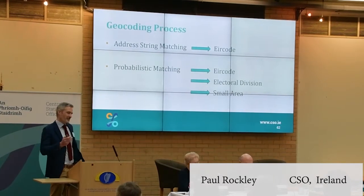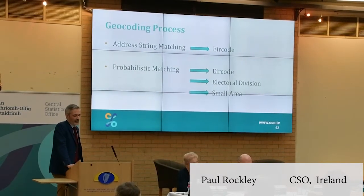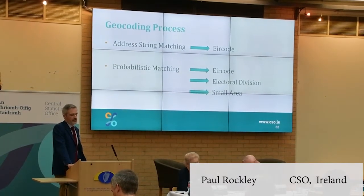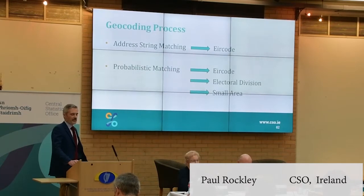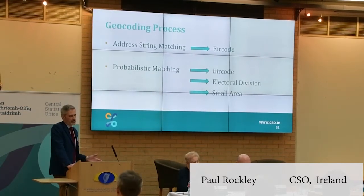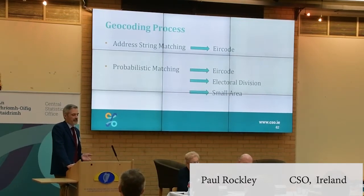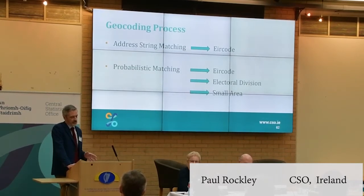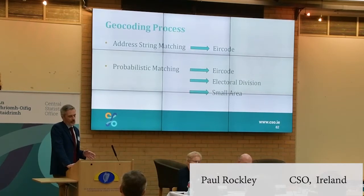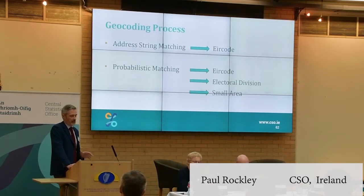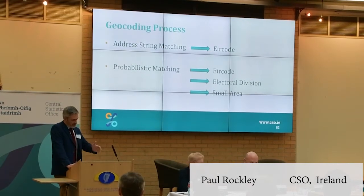We also have issues with non-unique addresses in Ireland. The process is not magic — if you have an address that is shared with multiple properties, you cannot put an Eircode on that. There are estimates that say about 30 percent of Irish addresses are non-unique. So then you move on to probabilistic matching methods, which can give you Eircode, electoral division, and small areas with varying degrees of accuracy.